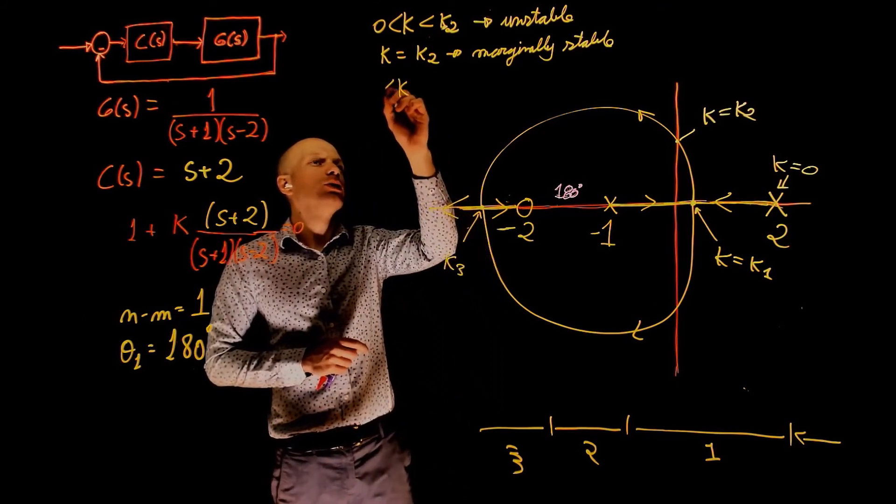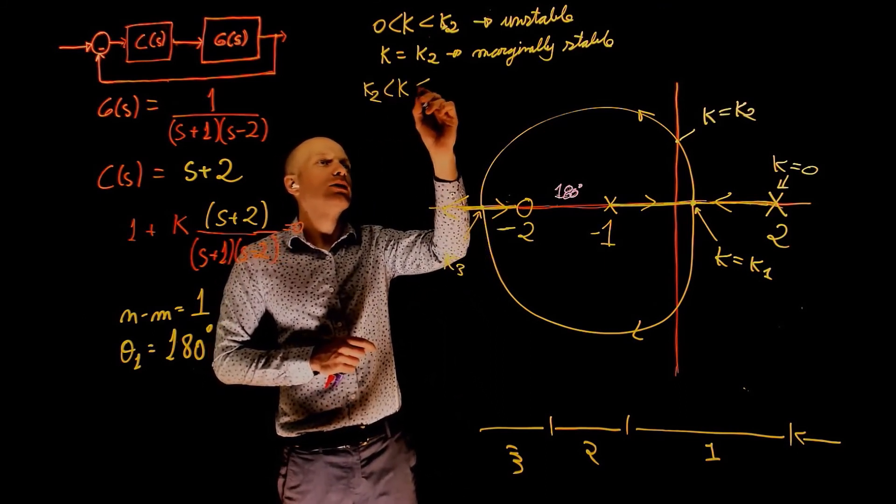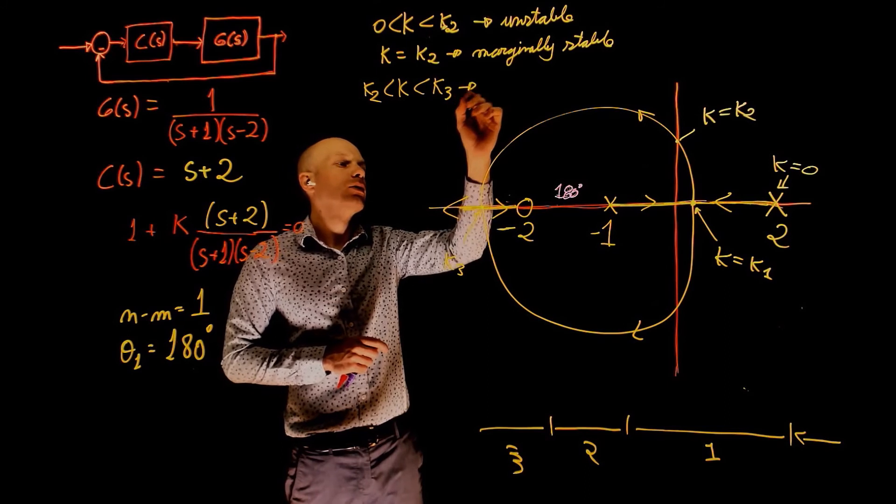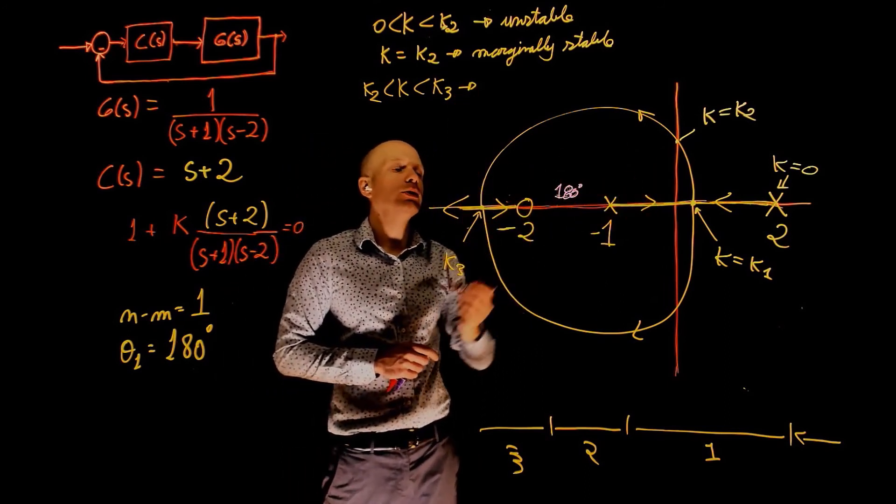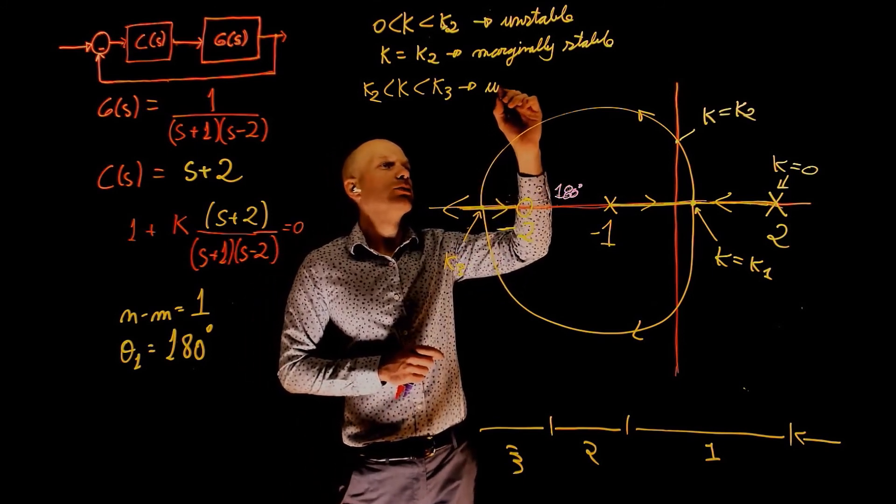And now for K between K2 and K3, which corresponds to this part of the root locus up to this point, from this point, the system is underdamped.